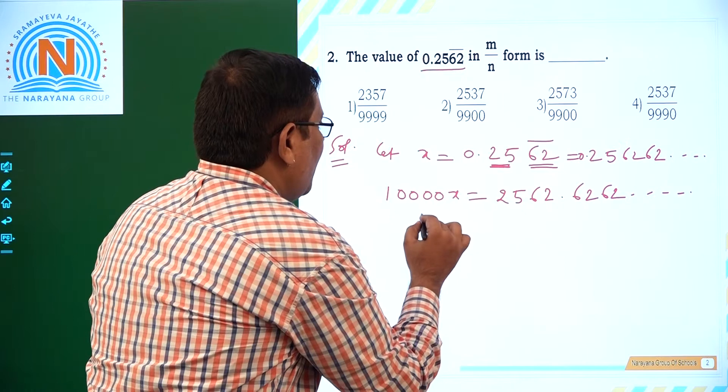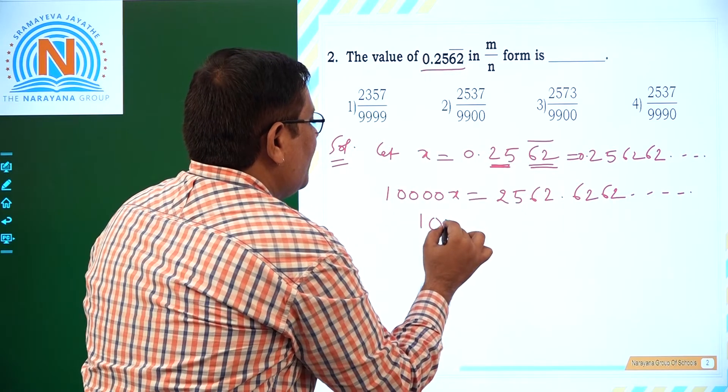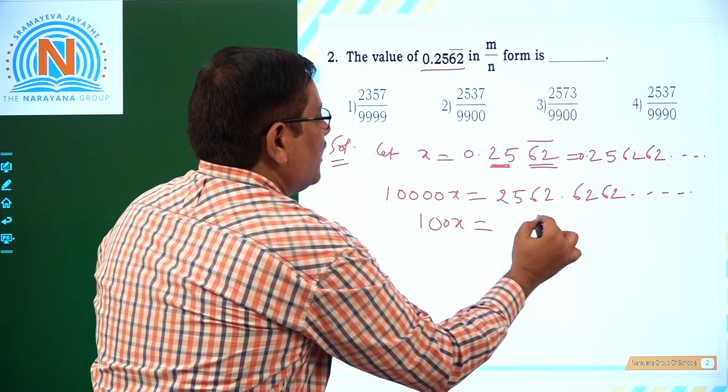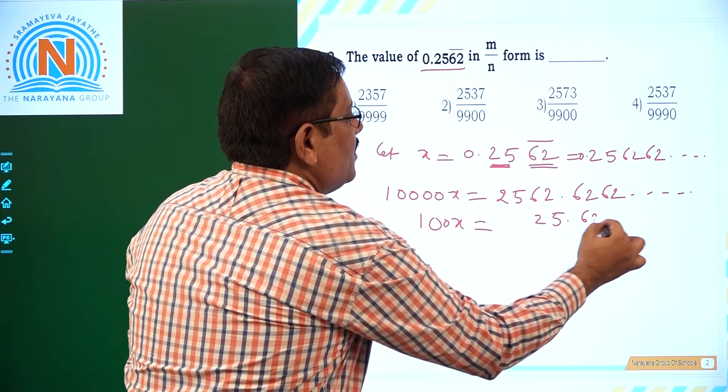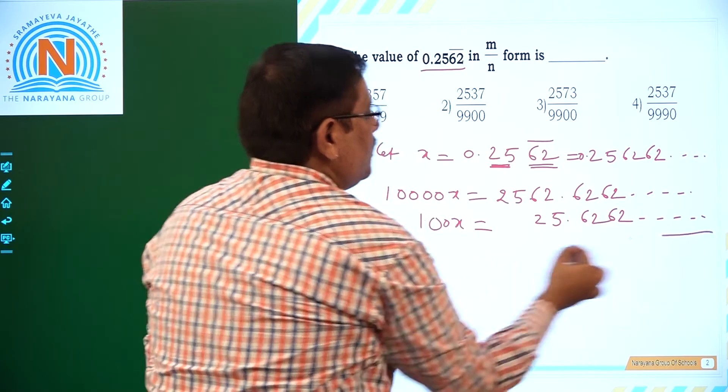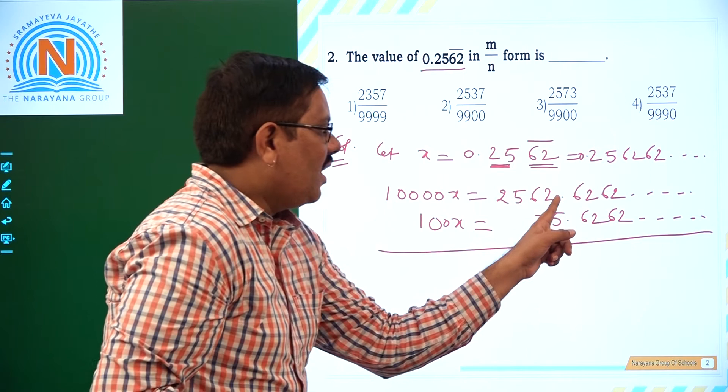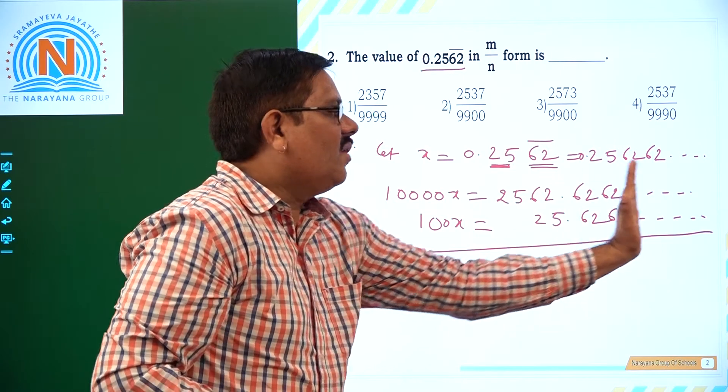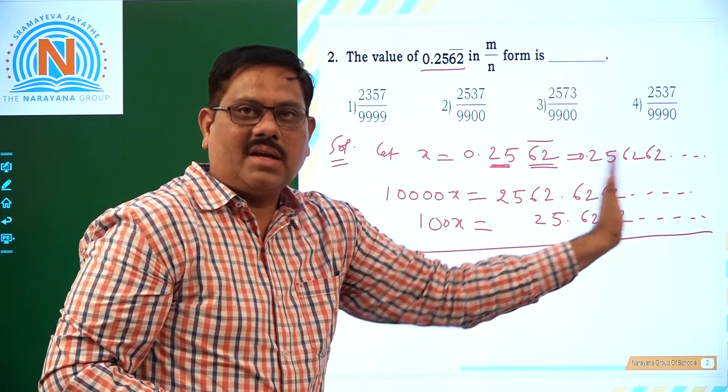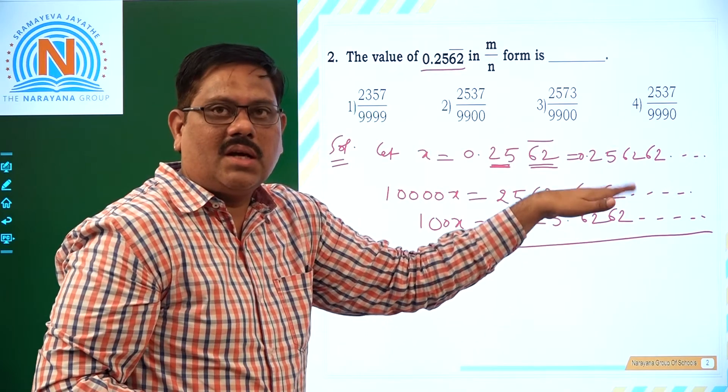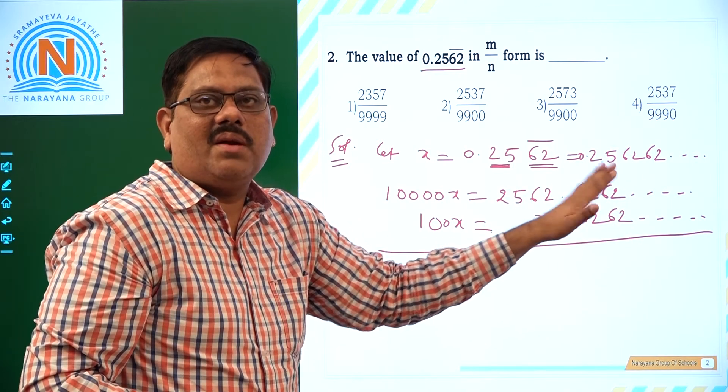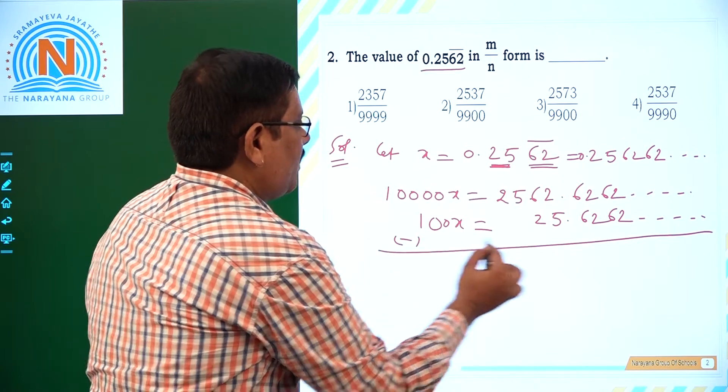So what to do now? We have to multiply here again with 100, 100x. What is 100x for us? 35.6262, so on. Next, here we have 2 digits after decimal which are non-recurring. So these 2 digits if you bring to left of decimal, then we can subtract with one another. This 6262 recurring part can be cancelled. We have to multiply here again with 100, 100x. What is 100x for us? 35.62, 62, 62. This is very very important step.